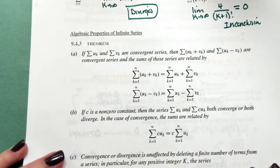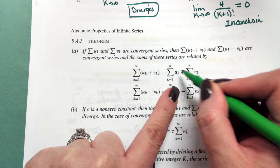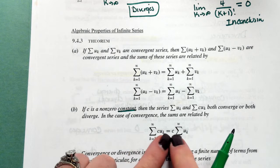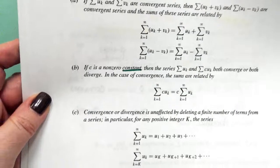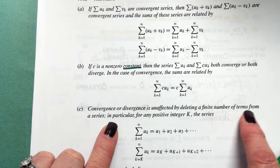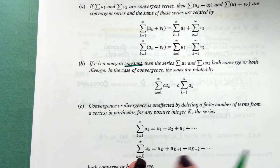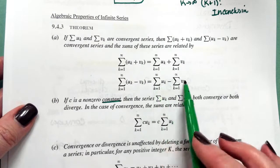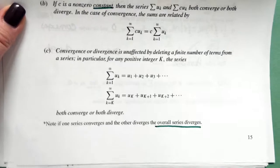There are some properties of series to consider. If you're trying to find the sum of a sum of two series, you can find the sum of each term and then add the two series together — same thing with subtraction. If you have a constant in your series, you can pull the constant out. Convergence or divergence is unaffected by deleting finite terms from a series. If one series diverges when you break the sum apart, the whole overall series will also diverge.